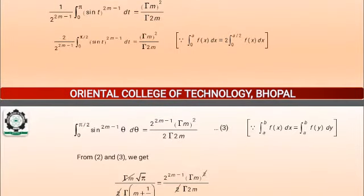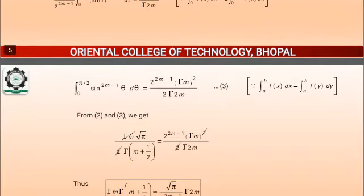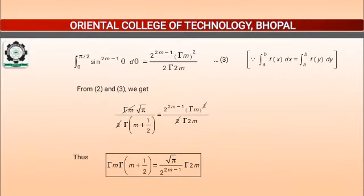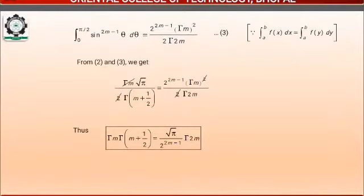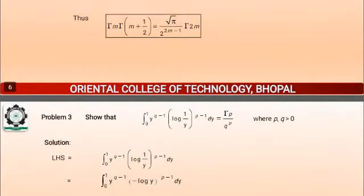That is, the integral from 0 to pi/2 of sin^(2M-1)(theta) d-theta equals 2^(2M-1) times Gamma(M)² upon 2 times Gamma(2M). This is because of the property that the integral from A to B of f(x) dx can be written as the integral from A to B of f(y) dy, so t is replaced by theta. From steps 2 and 3, we finally have Gamma(M) times Gamma(M + 1/2) equals under root pi times Gamma(2M) upon 2^(2M-1).